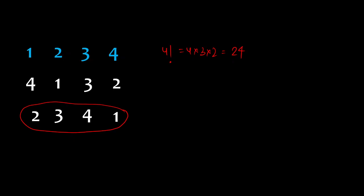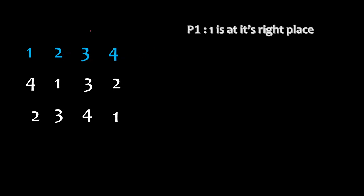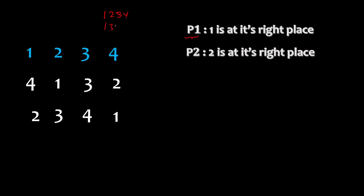The algorithm is to make a logical formulation of this problem first, and then play around with some logical rules. Let's say P1 is a possibility in which 1 is at its right place — for example, sequences like 1,2,3,4 or 1,3,2,4 or 1,4,2,3, sequences in which 1 is at the right place. I don't care about whether 2, 3, or 4 are at their right place. Similarly, P2 is the possibility in which 2 is at its right place.